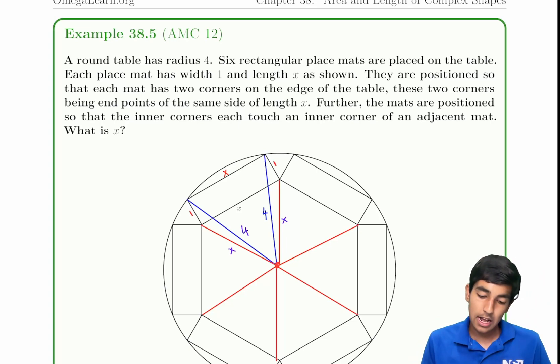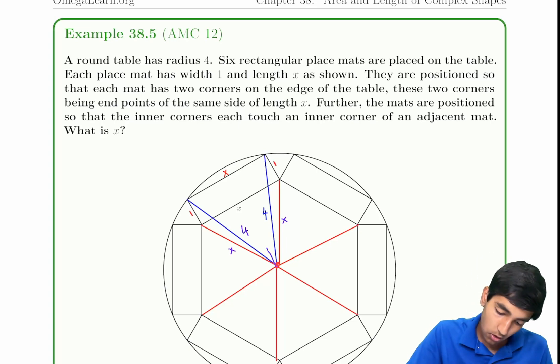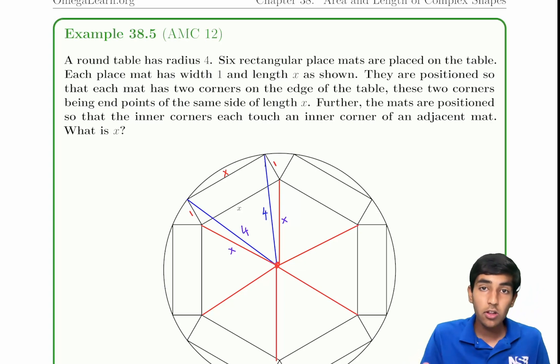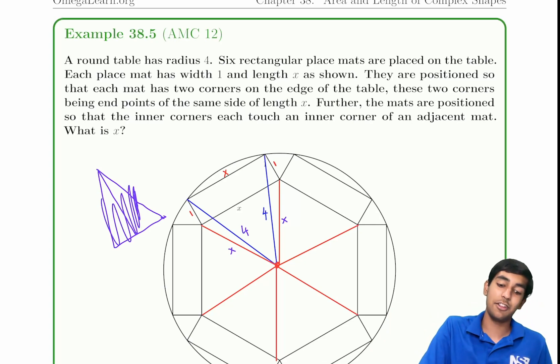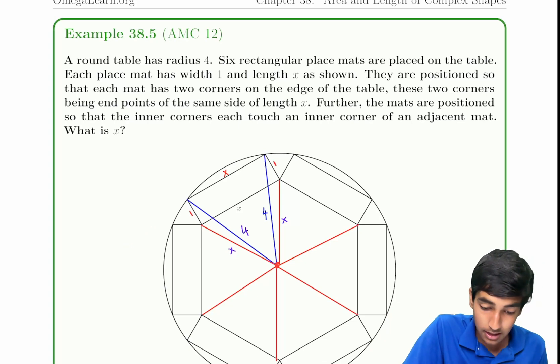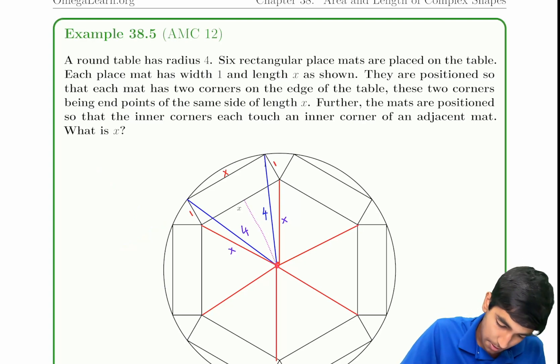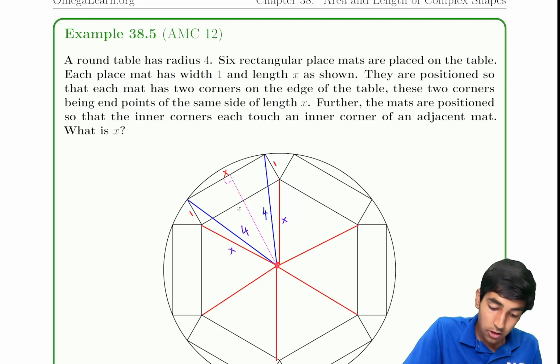Now we have to somehow use our radii condition. We have this radii here, and it's a very good idea when you have isosceles triangles, drop an altitude. So many times in problems you have an isosceles triangle, just drop the altitude. It's going to be a good strategy 90% of the time.